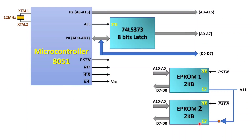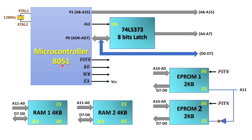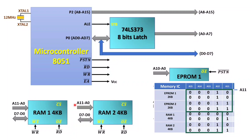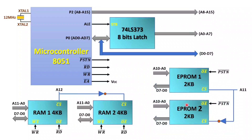That is how EPROM interfacing is done. For RAM1 and RAM2, each 4KB, address lines A0 to A11 are connected, and data lines D0–D7 are bidirectional. RD bar and WR bar from 8051 connect to the RAM read and write pins. Chip select uses A12 — directly to RAM1 and through an inverter to RAM2 — implementing partial decoding.